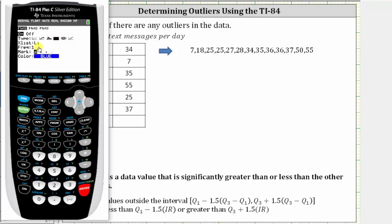The data is in L1, which is correct. So from here, we press zoom and then nine for zoom stat. This automatically adjusts the window to show all of the data values. And all the outliers are shown on the left or right as points.